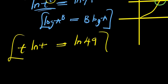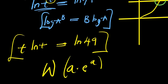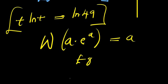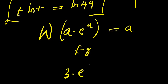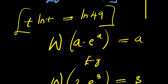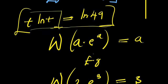The Lambert W function is applied when you have an expression of the form a·e^a. For example, if you have 3·e^3, applying the Lambert W function gives you 3. So we need to convert our expression t·ln(t) into the form a·e^a so we can apply the Lambert W function.